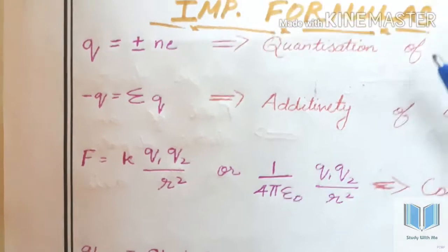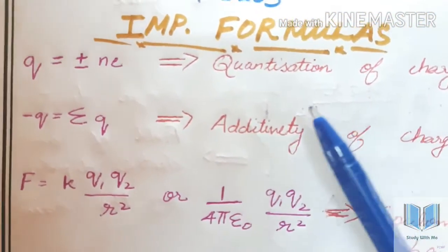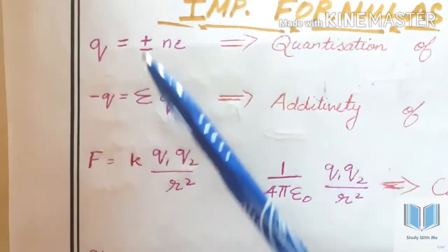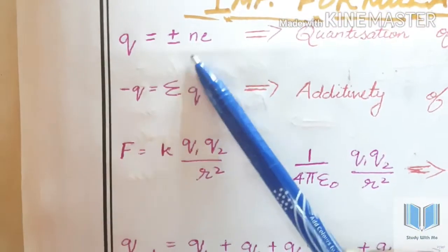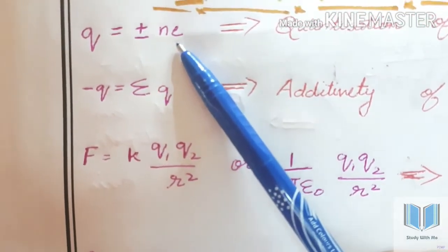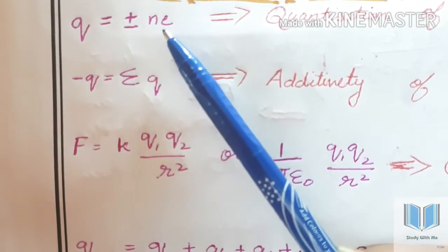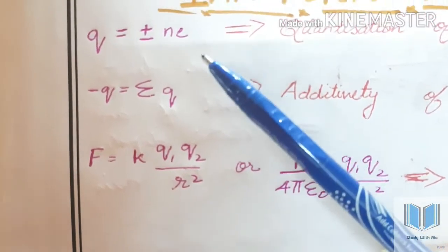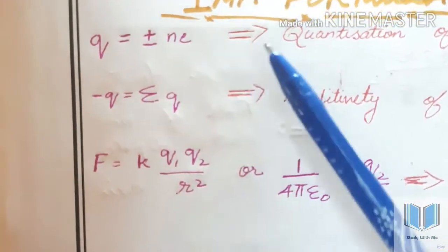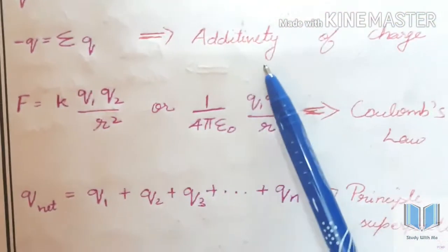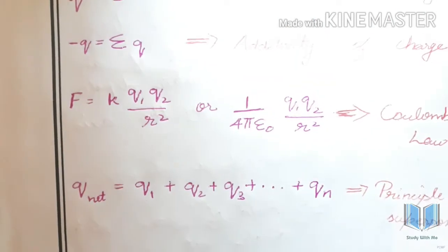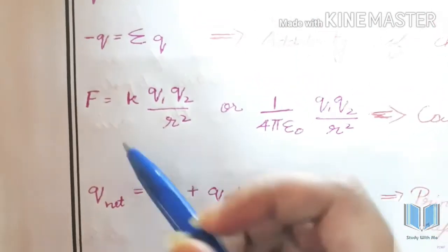First, we will learn a property question. We will learn quantization of charges. The formula is q is equal to plus or minus n into e. The next property is additivity of charges. The formula is q is equal to sigma q.